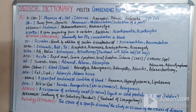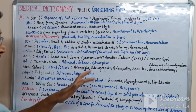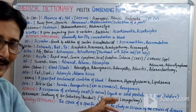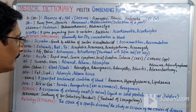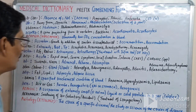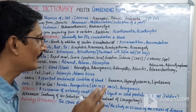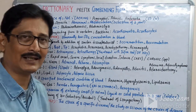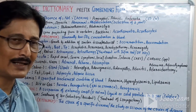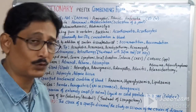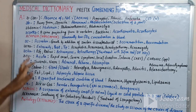'Acro-' means extremity, peak, or tip. 'Acromegaly' refers to extreme growth due to overaction of the pituitary gland. 'Acrophobia' — 'phobia' means fear, like hydrophobia. 'Acromaniac' involves extreme mania. 'Acro-hypothermia' — 'hypo' means low, 'thermy' means temperature — refers to abnormally low temperature in the peripheral organs such as hands or legs.